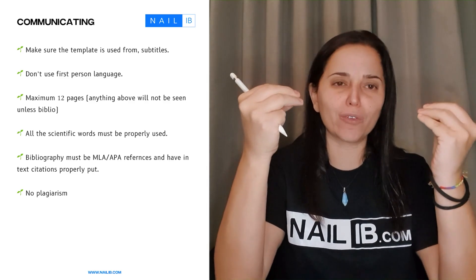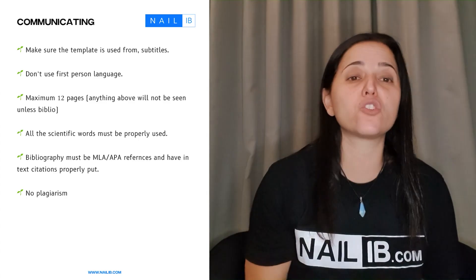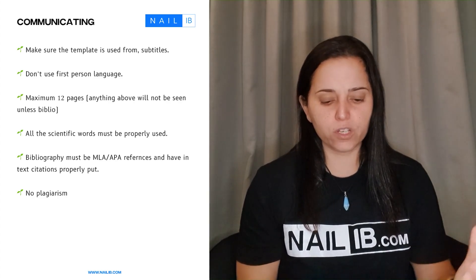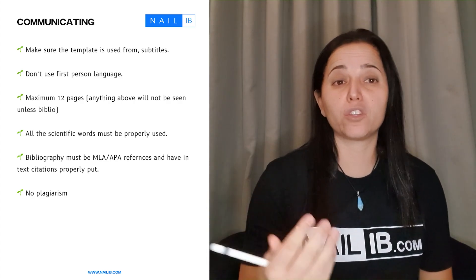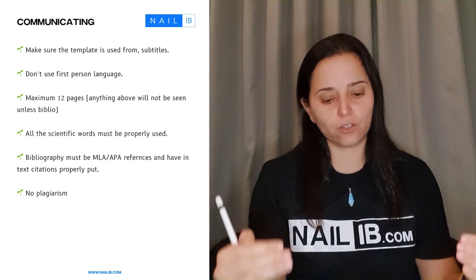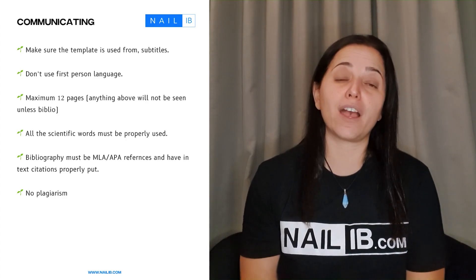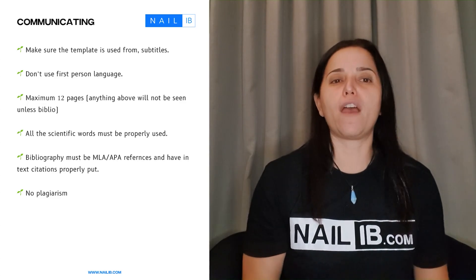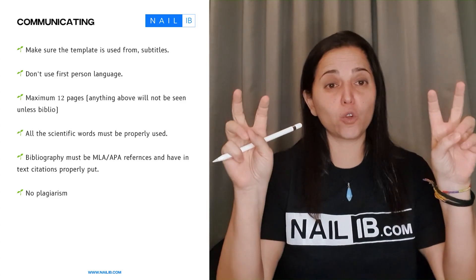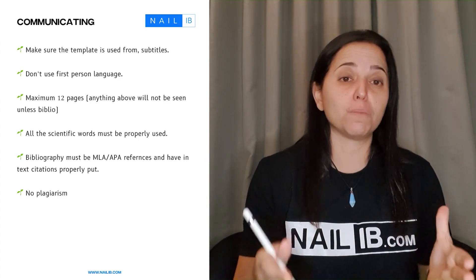That has to go throughout the entire paper. If examiners find even one instance where you did not use italics, points can be taken for communication — that's how strict we can be. For the bibliography, depending on what your teacher and school decide — MLA or APA — follow through exactly. And of course, no plagiarism. If you plagiarize, you might as well not get a diploma at all. Everything must be paraphrased, put into quotes if you use exactly the same sentence, and everything must be cited.